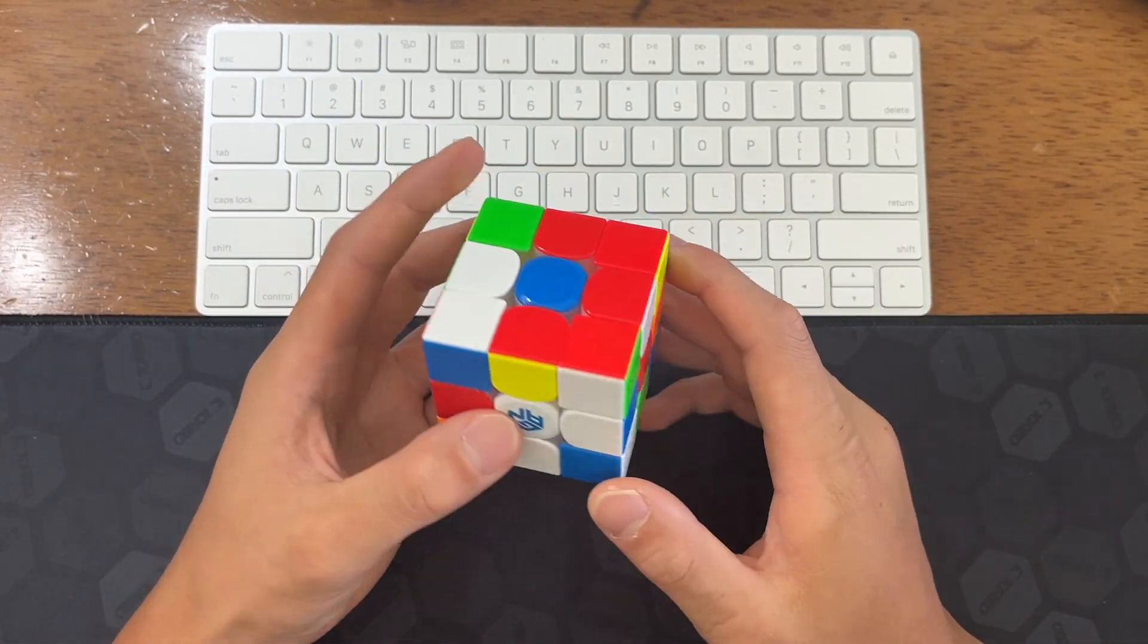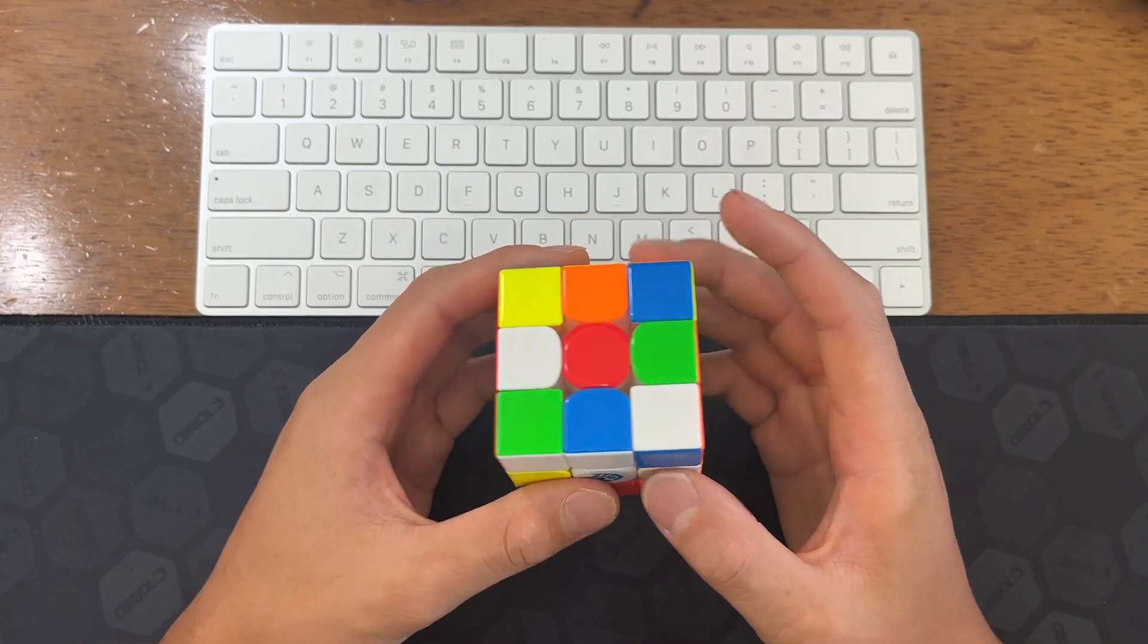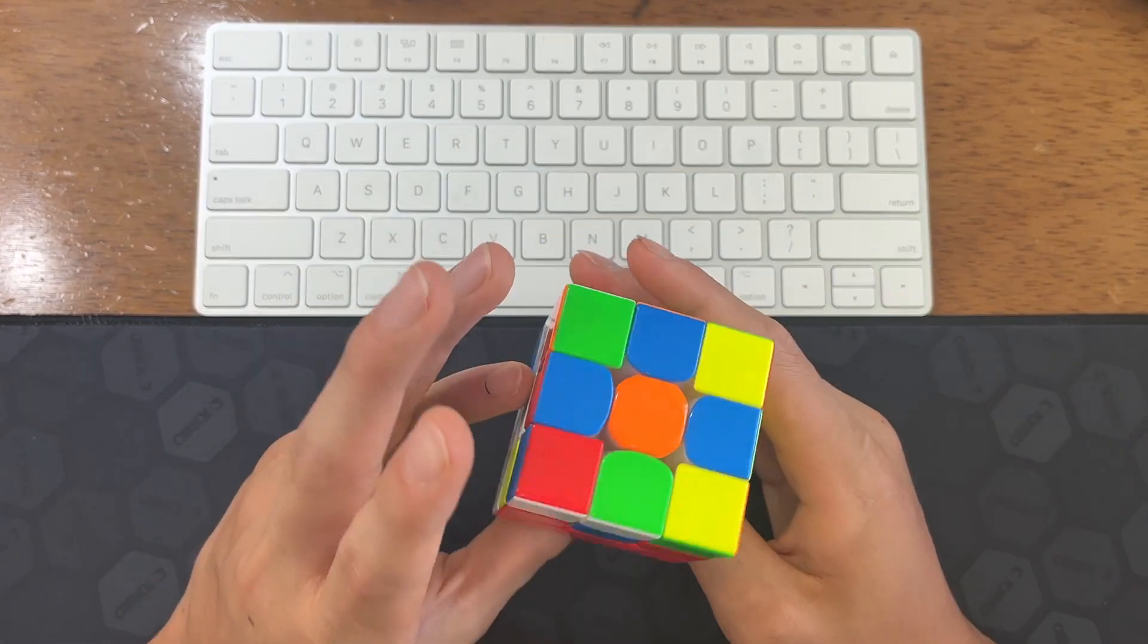Alright, so I have all the cross pieces in decent positions, but I don't see any good first pairs here.